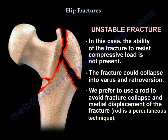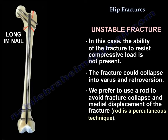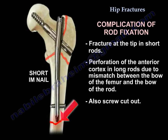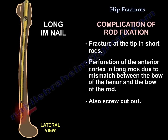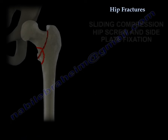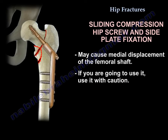When the posteromedial cortex is compromised, the ability of the fracture to resist compressive loads is gone, and the fracture could collapse into varus and retroversion. In this case, a rod is preferred — it will avoid fracture collapse and medial displacement. It is a percutaneous technique. Complications of the rod include fracture at the tip with short rods, perforation of the anterior cortex with long rods due to bow mismatch, and screw cut-out. A sliding compression hip screw with side plate is easy but may cause medial displacement of the shaft and must be used with caution.